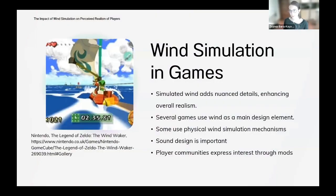When we look at wind simulation in games, we see that it is often used to add nuanced details to enhance overall realism, like swaying vegetation or drifting snow. Sometimes games use wind as a main design element, and sometimes they are used with physical wind simulation mechanisms, especially in arcades. Sound design is also important in wind simulation in games.